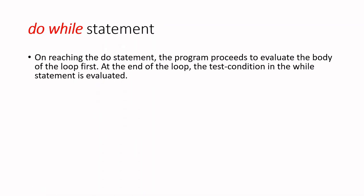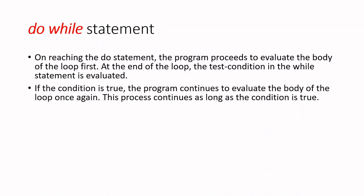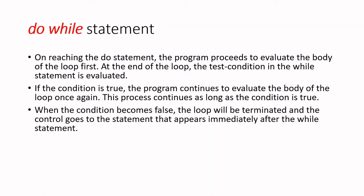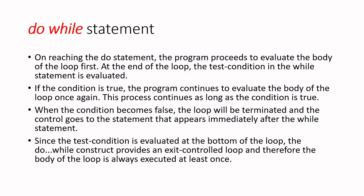On reaching the do statement, the program proceeds to the loop body. At the end of the loop, the test condition is evaluated. If the condition is true, the program continues to evaluate the body, and the process continues as long as the condition is true. To come out of the loop, the condition must become false. The difference between while and do-while is only in where the condition is placed — one is at the entry, the other at the exit. When the condition becomes false, the loop terminates and control goes to the statement immediately after the while statement. Since the test condition is evaluated at the bottom, do-while is exit-controlled and the body is always executed at least once.